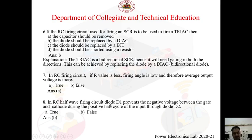Question 8: In an RC half-wave firing circuit, diode D1 prevents the negative voltage between the gate and cathode during the positive half cycle of the input through diode D2 — True or False? This is a false statement. In the RC half-wave firing circuit, diode D1 does prevent the negative voltage between the gate and cathode, but it is not through diode D2 — it is through the capacitor. So this statement is False.